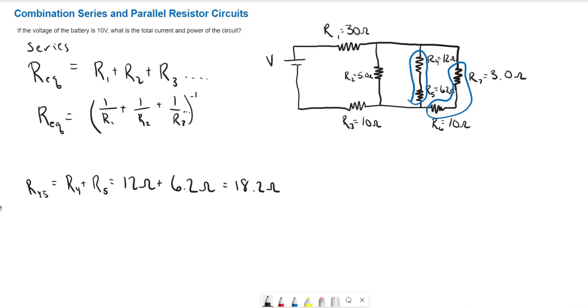And then for R6 and R7, we're just adding these together. They're also in series. So that's 3 ohms plus 10 ohms. So of course that's just 13 ohms.